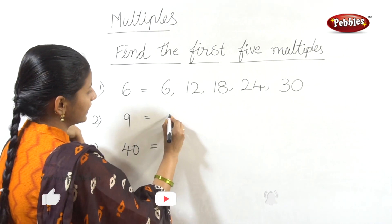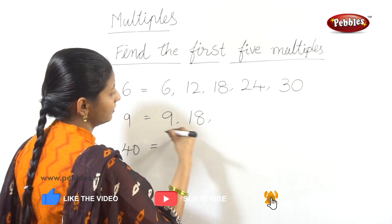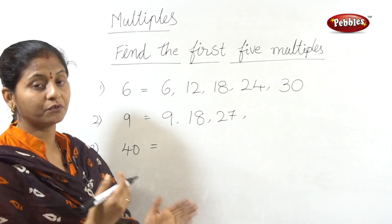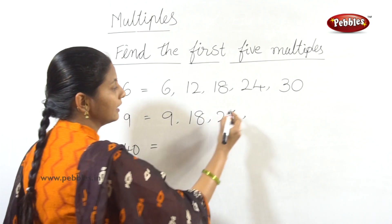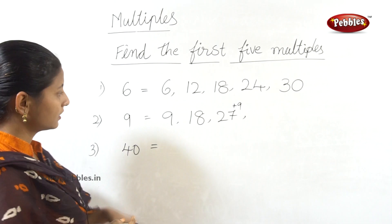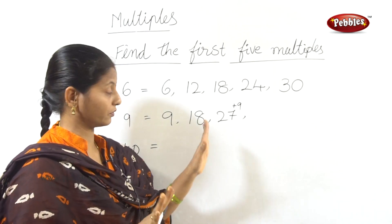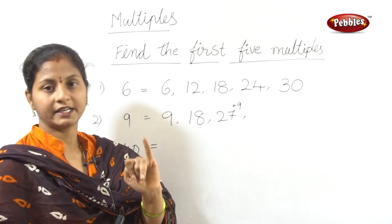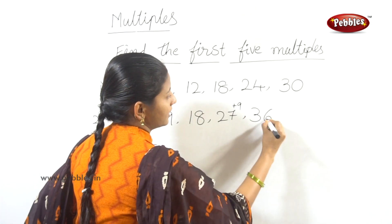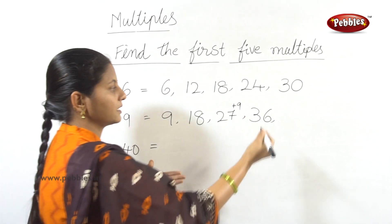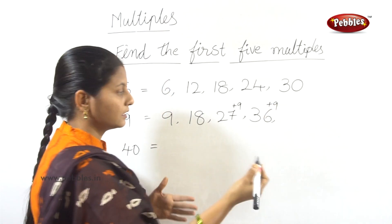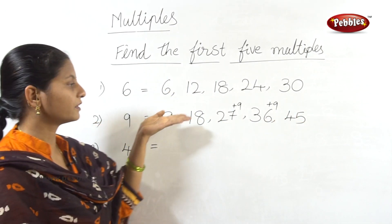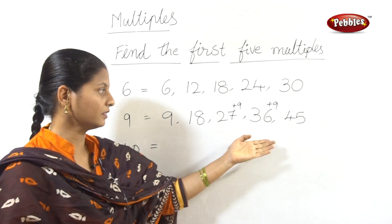First 5 multiples of 9: 9 ones are 9, 9 twos are 18, 9 threes are 27. For the 4th multiple, 27 plus 9 gives 36. For the 5th multiple, 36 plus 9 gives 45. So the first 5 multiples of 9 are 9, 18, 27, 36, and 45.